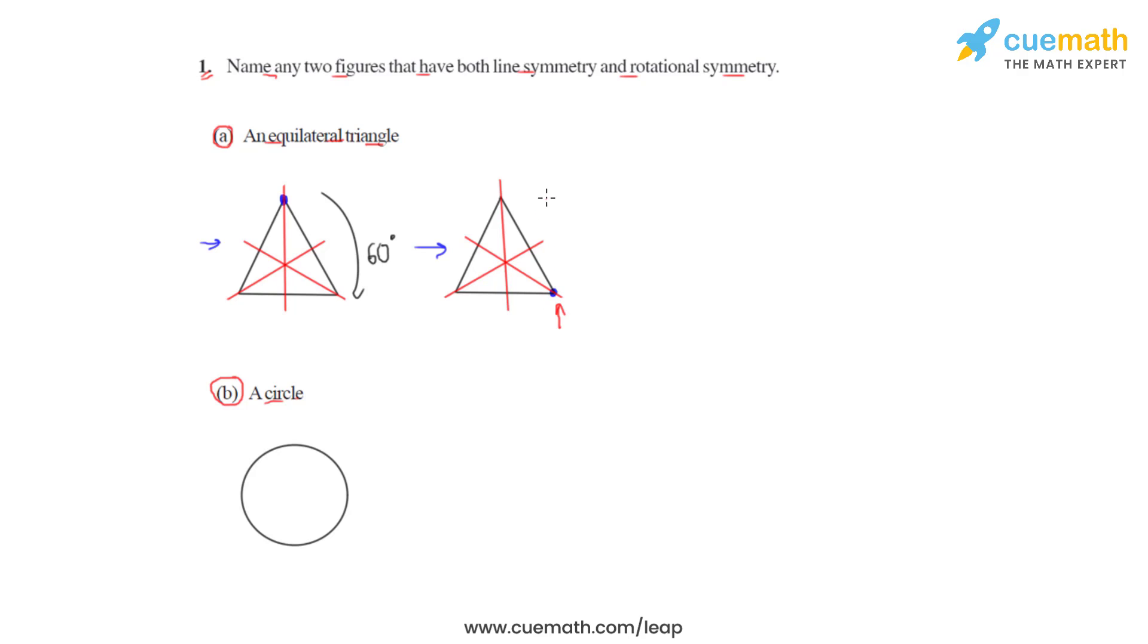If we again rotate this figure by 60 degrees in the clockwise direction, let us see the new position of this blue dot. Rotating the question figure by 120 degrees will result in this position of the blue dot, which again gives us a figure similar to the question figure, but it has undergone rotation because of which the blue dot is now here.